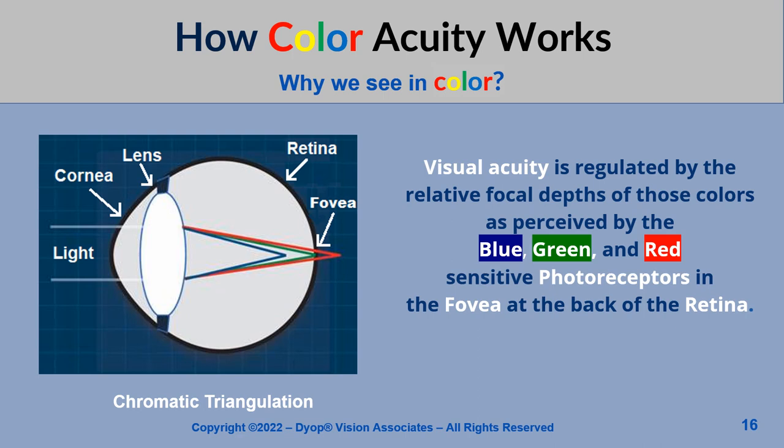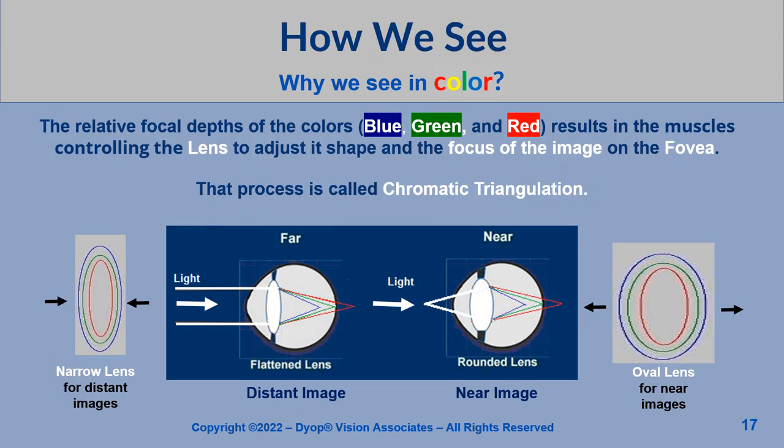Visual acuity is regulated by the relative focal depths of those colors as perceived by the blue, green, and red sensitive photoreceptors in the fovea at the back of the retina. The relative focal depths of the colors blue, green, and red results in the muscles controlling the lens adjusting its shape and the focus of the image on the fovea. That process is called chromatic triangulation.